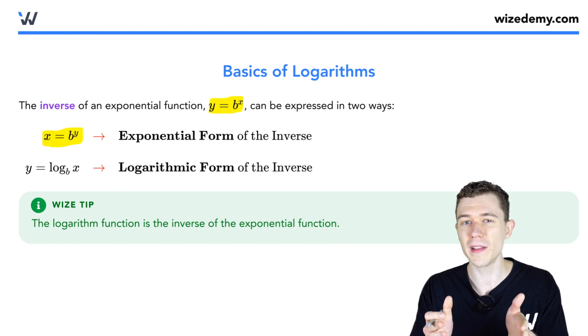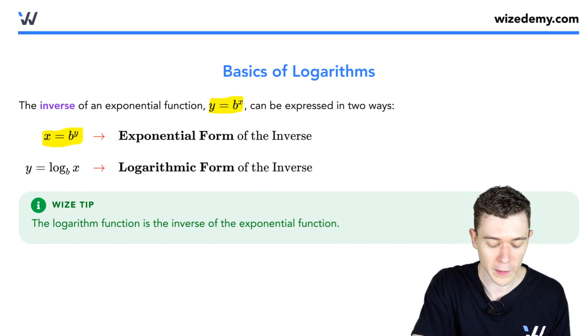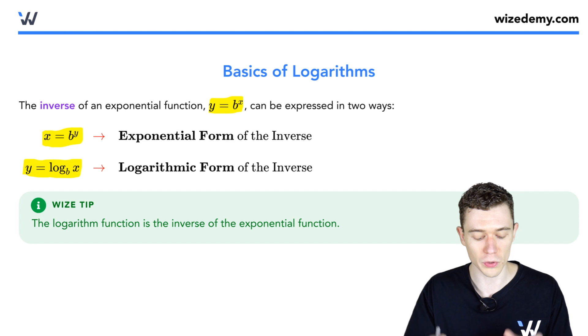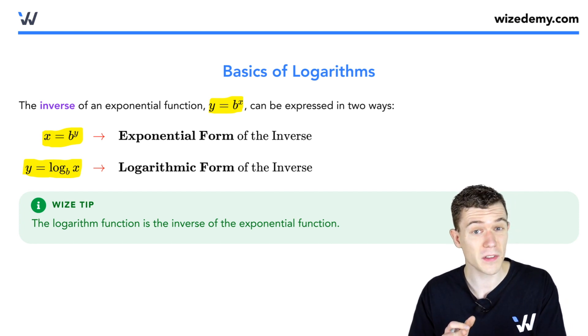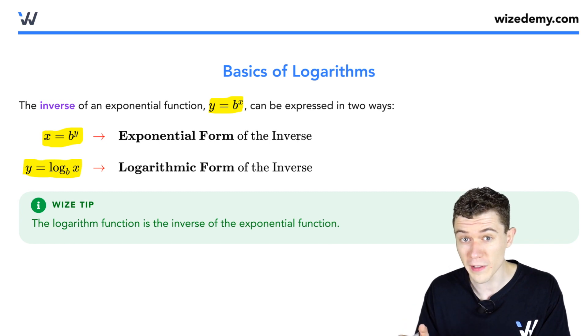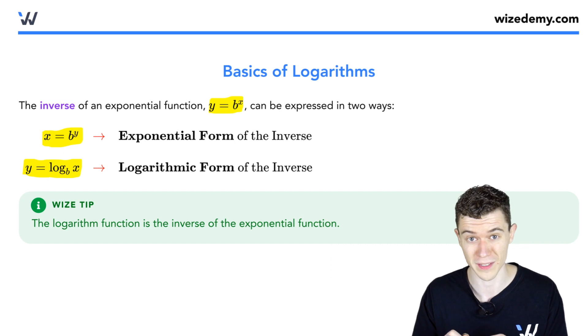But we might write that differently. We write the equivalent logarithmic form as y equals log base b of x. That's how it's read. b is still the base, it's just a logarithm base, and this is typically what we mean when we're talking about logarithms.